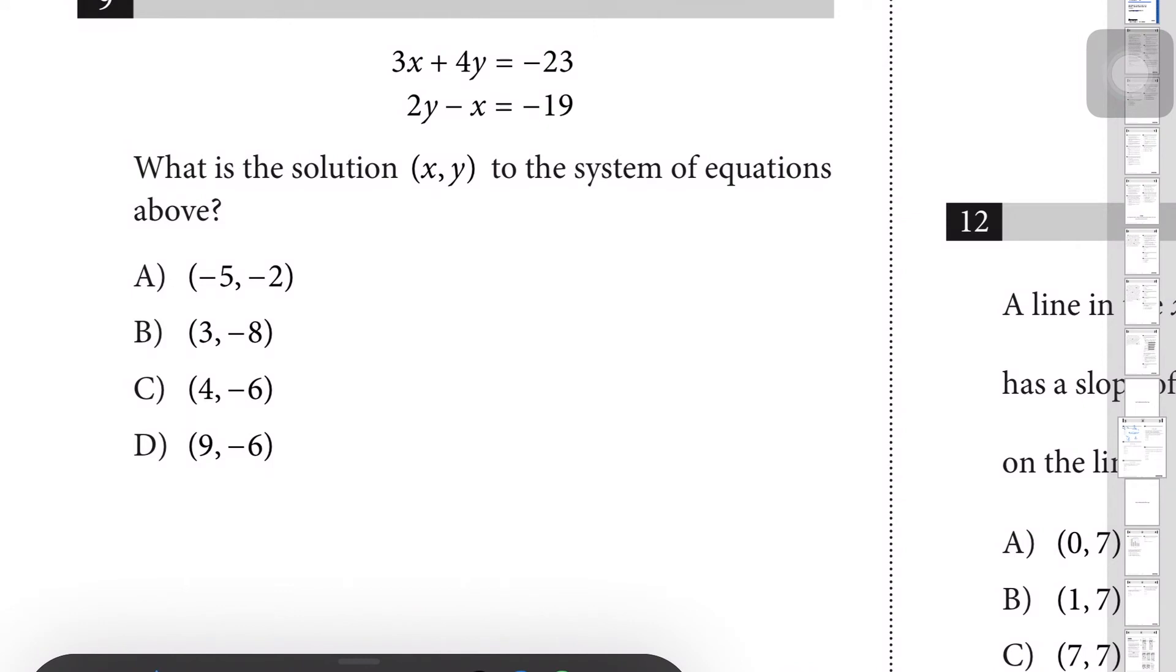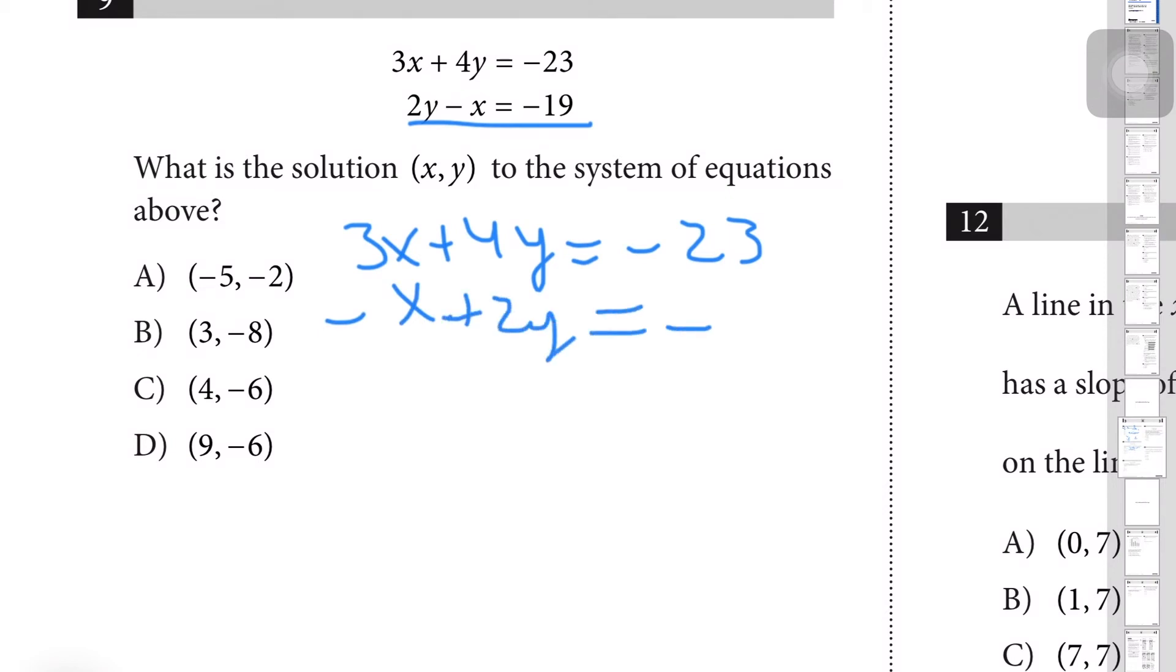Question number 9 is a system of equations: 3x + 4y = -23, 2y - x = -19. What is the solution (x, y) to the system of equations above? First things first, I'm just going to rewrite the second equation so that the x comes first, so that'd be easier for me to knock out the variable of y. So 3x + 4y = -23, and then -x + 2y = -19. So I've simply just rearranged the second equation.